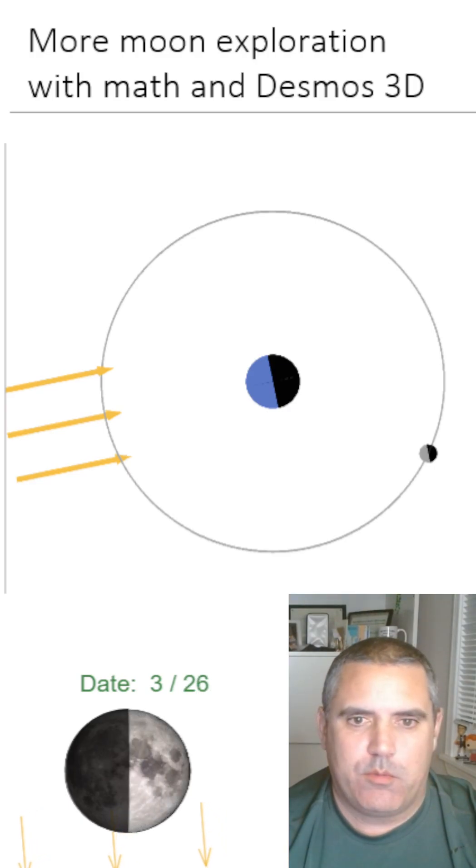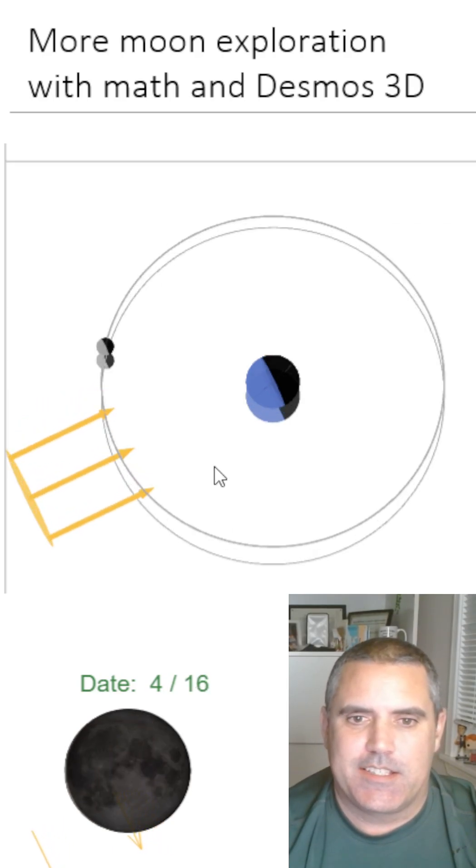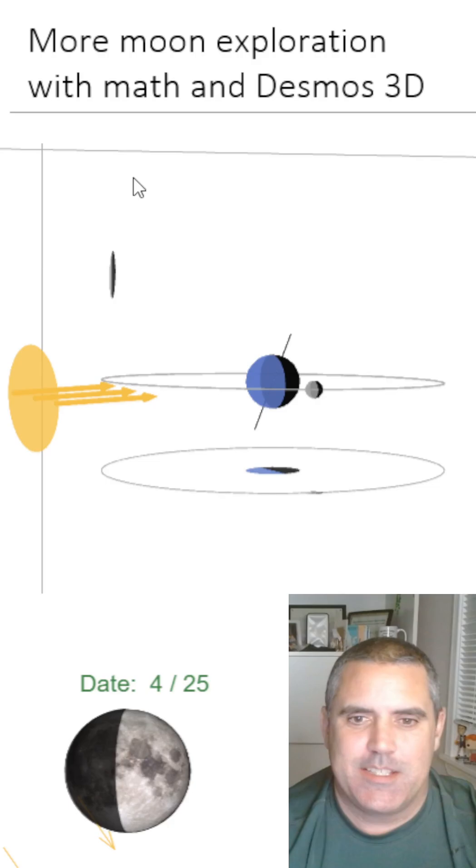In this one I want to talk about 3D. Now you might say that picture you're showing looks like it's 2D. And it is except it's not. This is Desmos 3D.